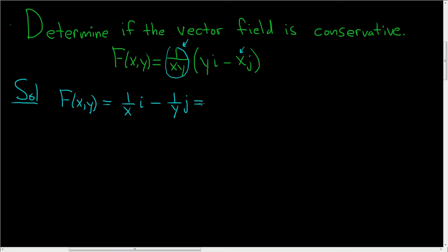We should take this a bit further and write it as 1 over x i plus parentheses negative 1 over y j. Okay, now we're ready to check. So this here is going to be big M, and this here is going to be big N.